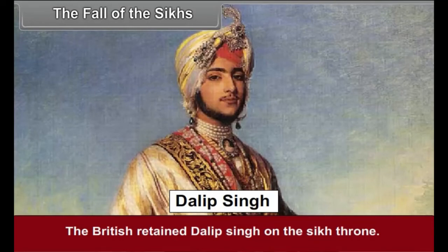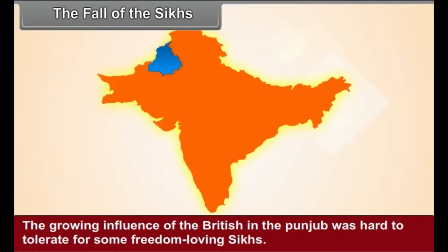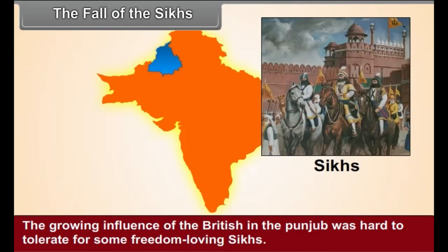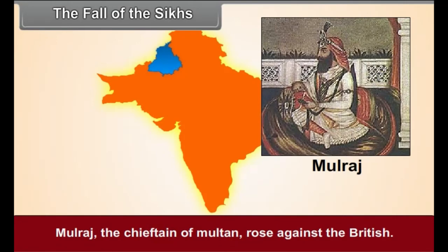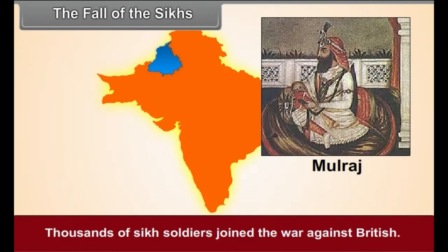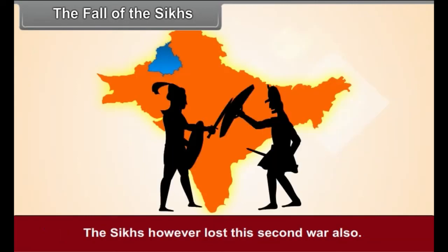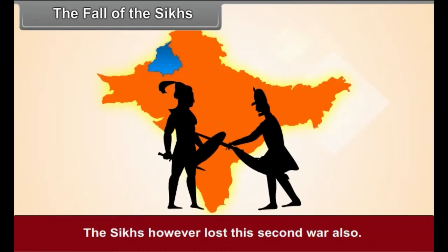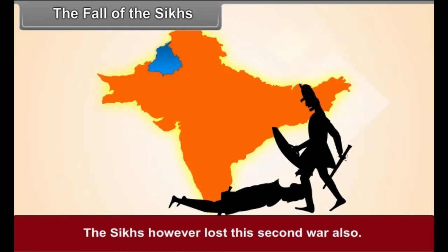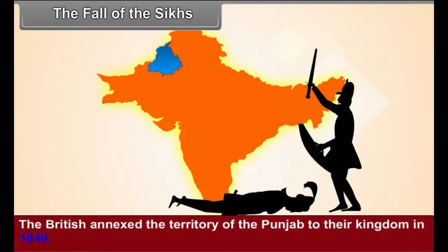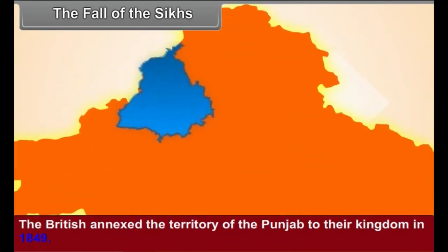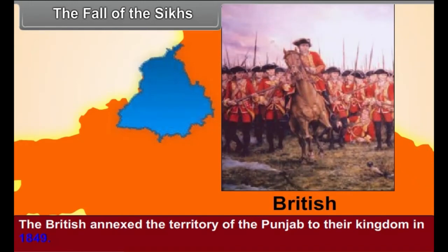The British retained Dalip Singh on the Sikh throne. However, the growing influence of the British in the Punjab was hard to tolerate for some freedom-loving Sikhs. Mulraj, the chieftain of Multan, rose against the British, and thousands of Sikh soldiers joined the war against the British. The Sikhs, however, lost the second war also. The British annexed the territory of the Punjab to their kingdom in 1849.